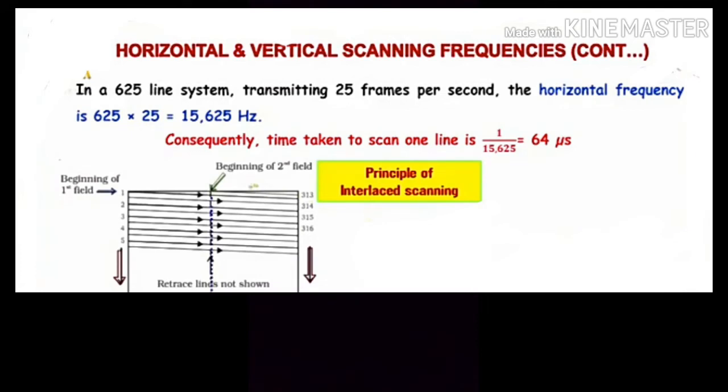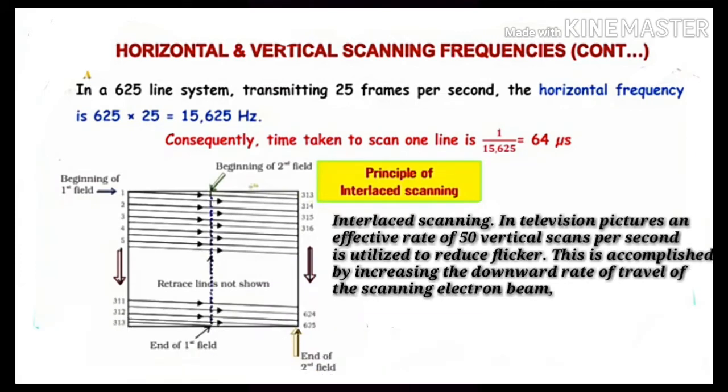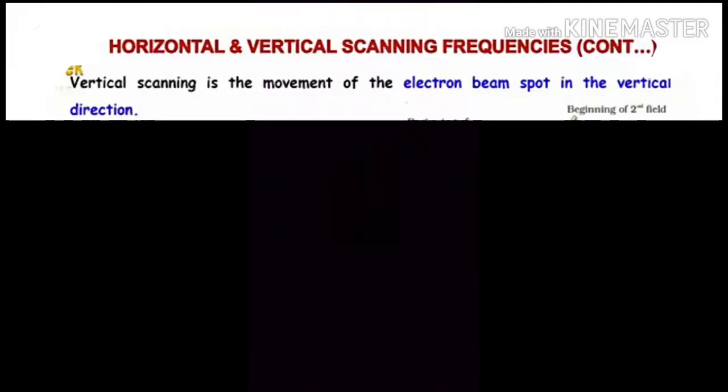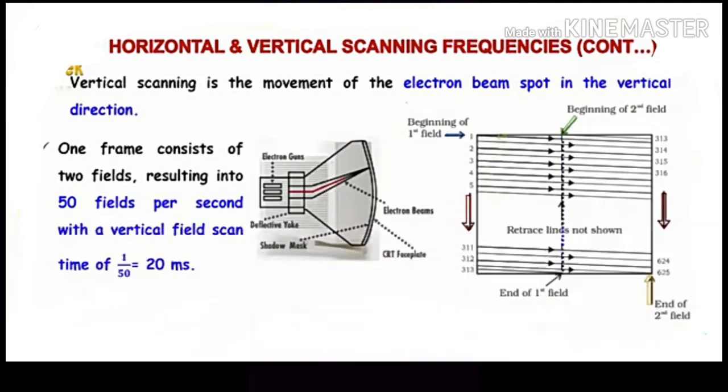In a 625 line system transmitting 25 frames per second, the horizontal frequency is 625 times 25, which equals 15,625 Hertz. Consequently, the time taken to scan one line is 1 divided by 15,625, which equals 64 microseconds. Vertical scanning is the movement of the electron beam spot in the vertical direction.